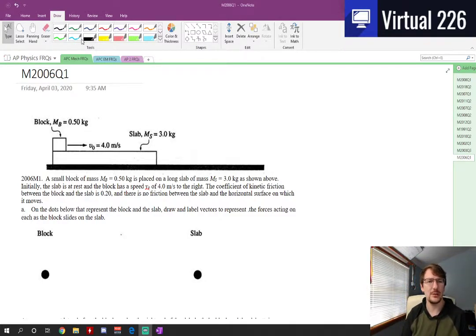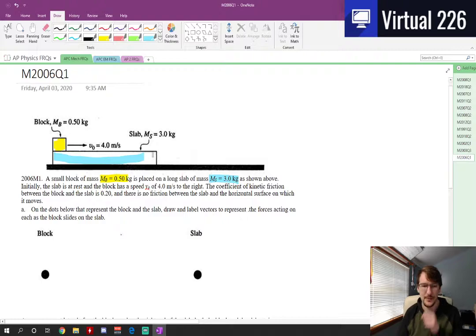We're taking a look at an AP Physics C problem from 2006 Mechanics Question 1. We've got a small block of mass 0.5 kilograms placed on top of a long slab with a mass of 3 kilograms. Initially the slab's at rest and the block, which we have in yellow here, has a speed v0 of 4 meters per second to the right. There is friction between the block and the slab with a coefficient of friction of 0.2. No friction is between the slab and the horizontal surface on which it's moving.